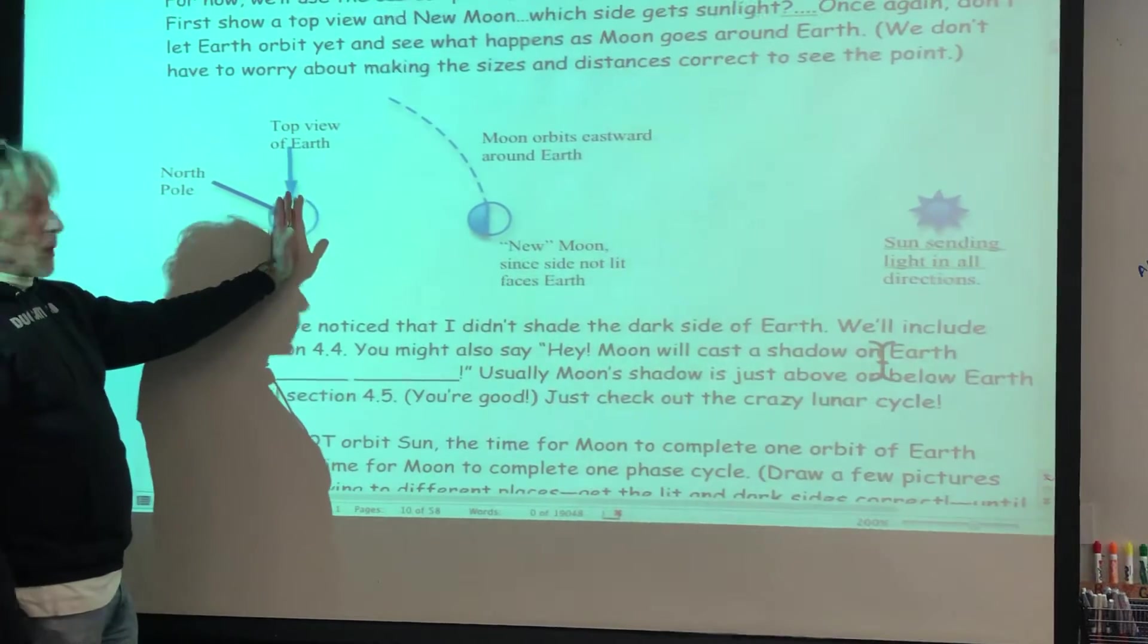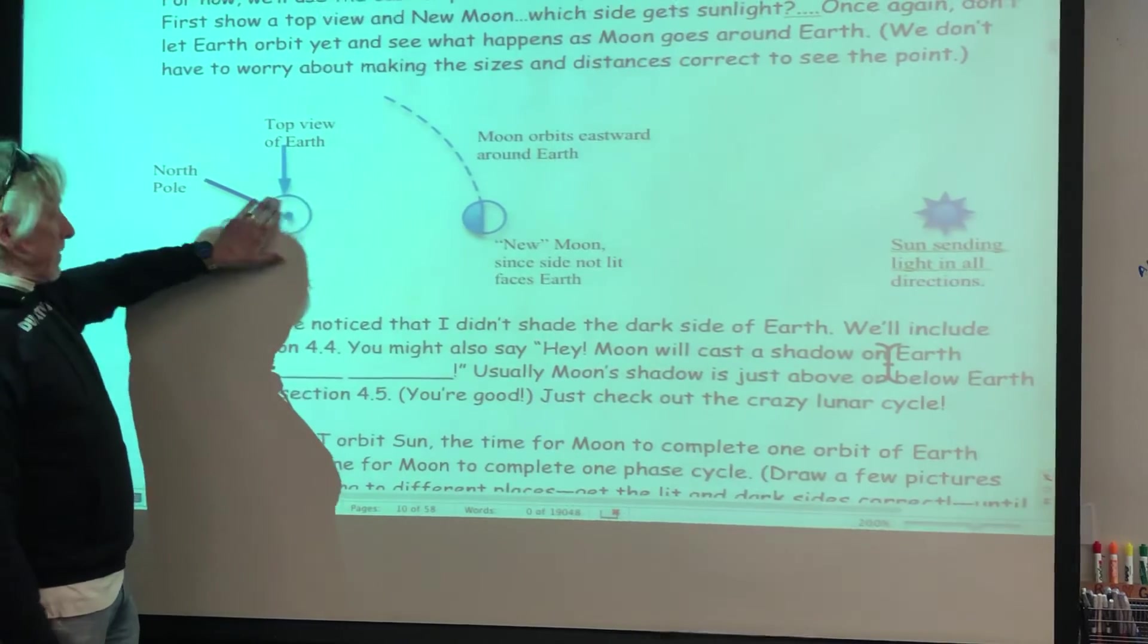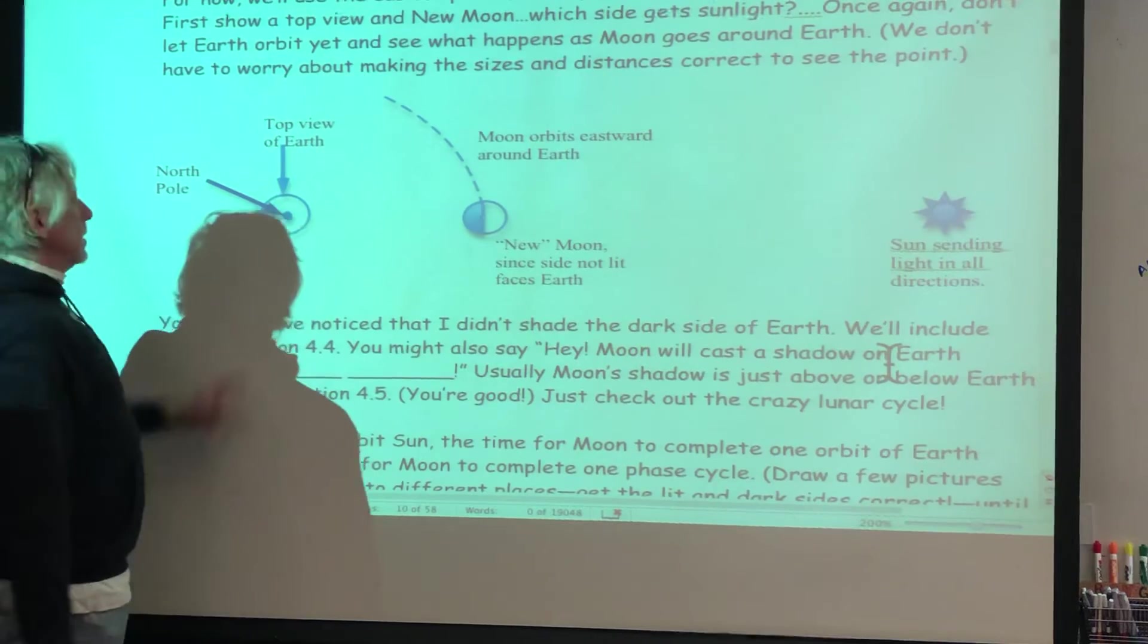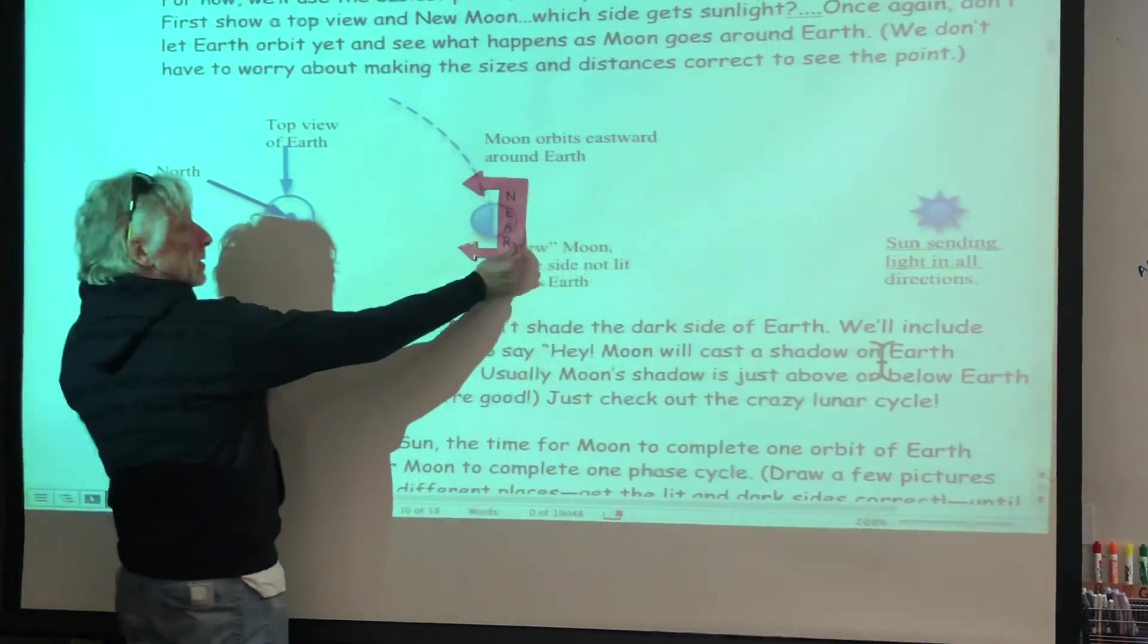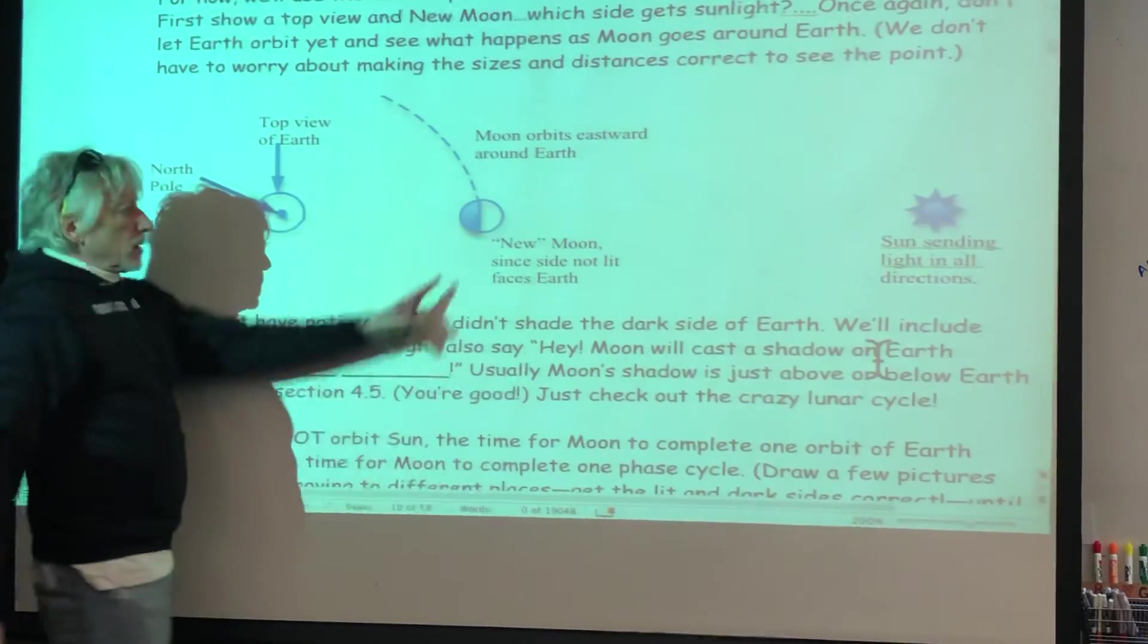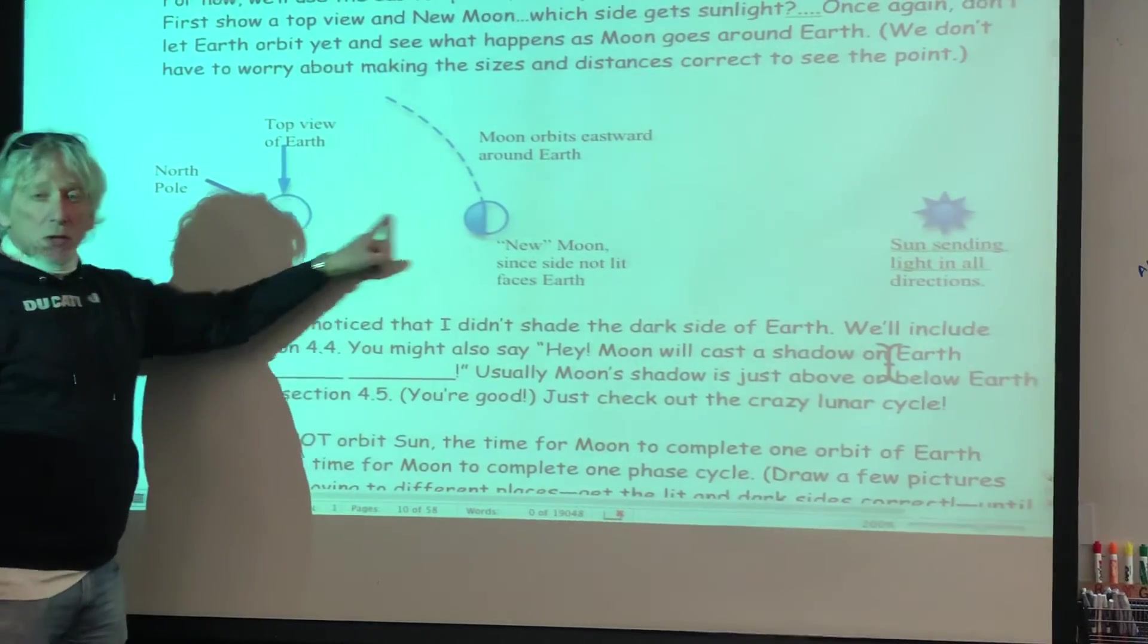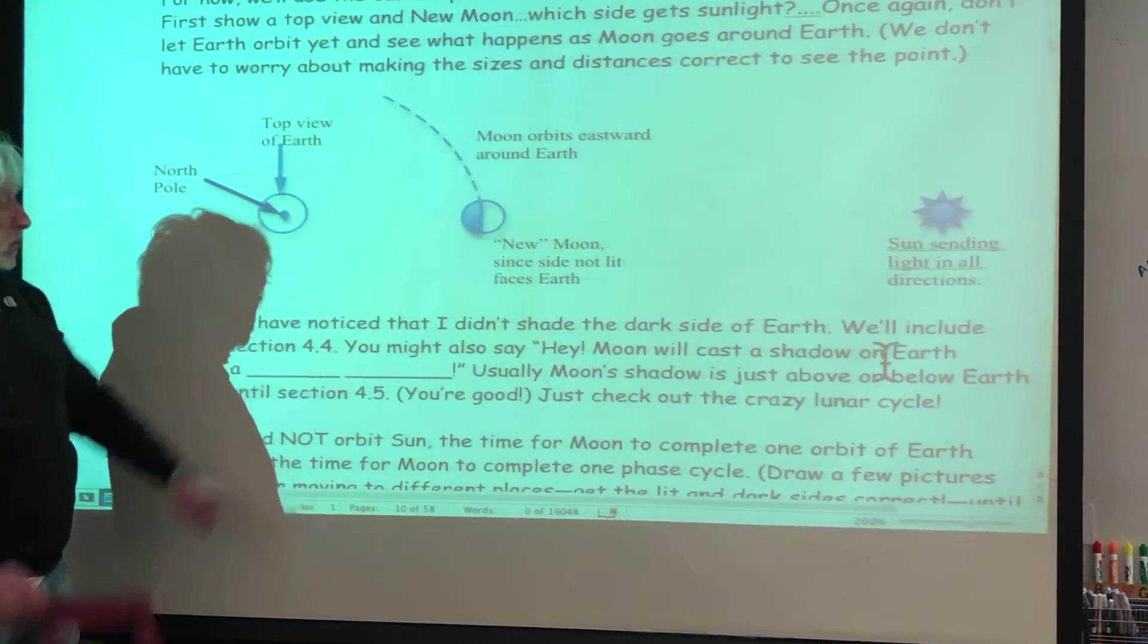And so from Earth, Earth would have a terminator too, wouldn't it? Have a night side and a light side. Why? Because that's a big old light bulb with a lot of watts. A lot of luminosity. That side is facing Earth. That clearly is a new moon. Don't worry about moon's shadow either. We'll talk about that.